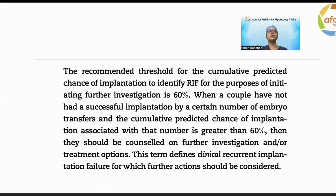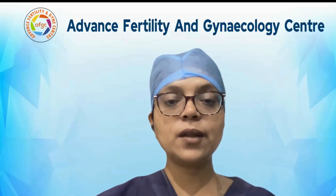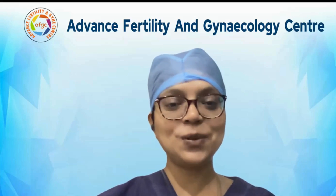The recommended threshold for cumulative predictive chance of implantation to identify recurrent implantation failure — for the purposes of initiating further investigation — is 60%. When a couple has not had successful implantation by a certain number of embryo transfers and the cumulative predictive chance of implantation is greater than 60%, they should be counseled on further investigation and treatment options. It's not a blanket rule that everyone after three, four, or five failures has RIF — it depends on multiple factors. In the next video, we'll cover what investigations to do and how to improve success.